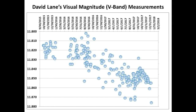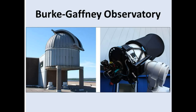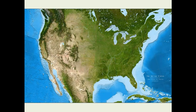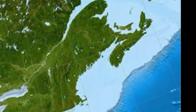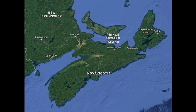This is a scatter plot of the V-band measurements that David Lane has taken of Tabby Star over a time period from October 27, 2015 to January 10, 2018 — approximately 27 months of data. Each light blue circle represents a single V-band measurement. These measurements were taken from the Burke-Gaffney Observatory located in Halifax, Nova Scotia, Canada. This observatory is far enough north near the pole that David can get clear measurements of Tabby Star this time of year when others cannot, provided the weather cooperates. We are very fortunate to have his data to continue monitoring this star.